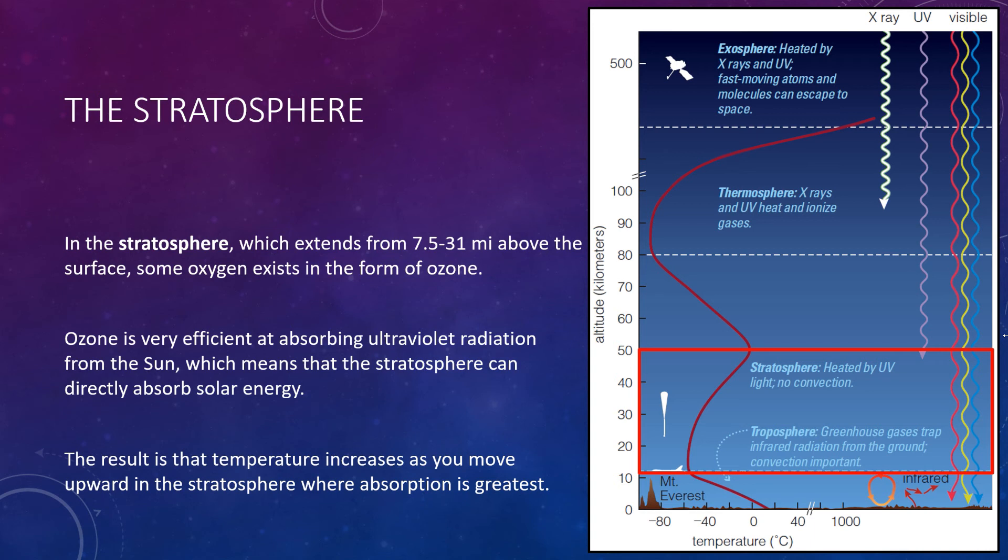The lack of convection makes the air relatively stagnant and stratified or layered with layers of warm air overlaying cooler air. This stratification explains the name stratosphere. The lack of convection also means that the stratosphere has essentially no weather and no rain. Pollutants that reach the stratosphere, including the ozone-destroying chemicals known as chlorofluorocarbons or CFCs, remain there for decades. Note that a planet can have a stratosphere only if its atmosphere contains molecules that are particularly good at absorbing ultraviolet photons. Ozone plays this role on Earth, but the lack of oxygen in the atmosphere of other worlds means that they also lack ozone. As a result, Earth is the only planet that we know of that has a stratosphere.